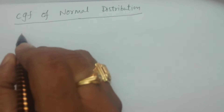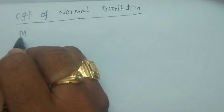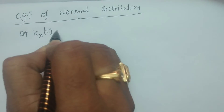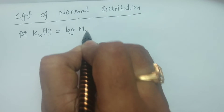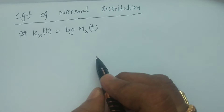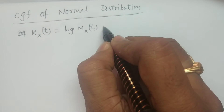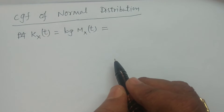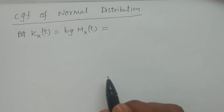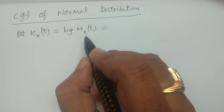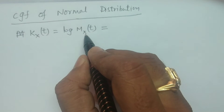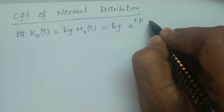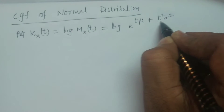What is cumulant generating function? It is K(x,t). K(x,t) is equal to log M(x,t), where x is a normal variable and it follows a normal distribution. The moment generating function of normal distribution M(x,t) is e to the power t·μ plus t² σ²/2.